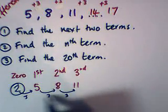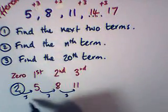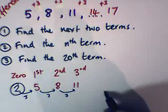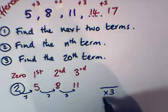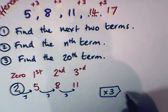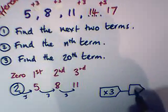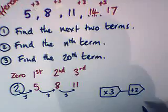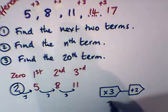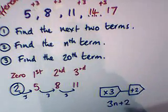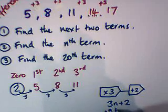And from this, we should be able to find a number machine that works for this. The number machine that works for this sequence is actually times by 3, plus 2. And that just happens to be 3n plus 2, which is our nth term.